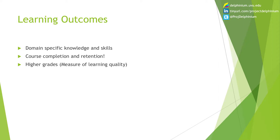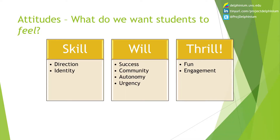The learning outcomes I care about most are course completion and retention — we want students to finish because they want to, and we want the quality of their work to go up. In terms of what we want students to feel, I summarize it as skill, will, and thrill. Thrill is obvious — we want them to have fun and be engaged because it's pleasurable. Will refers to motivation: success, a sense of community, and autonomy.